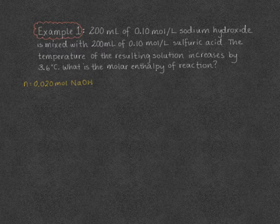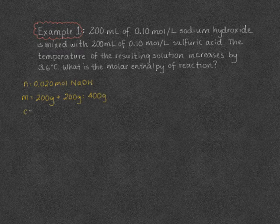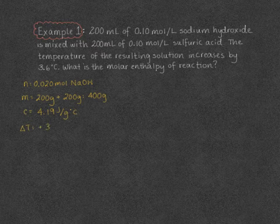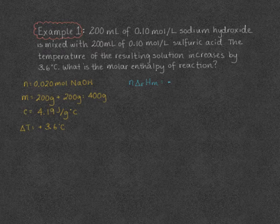The mass of water in our reaction is 200 milliliters from the sodium hydroxide plus 200 grams from the sulfuric acid, giving us 400 grams of water. The specific heat capacity of water is 4.19 joules per gram degrees Celsius, and the change in temperature is positive 3.6 degrees Celsius. We can now set up our equation: the reaction system is on the left — moles times molar enthalpy — and that equals negative mcΔT of our surroundings.